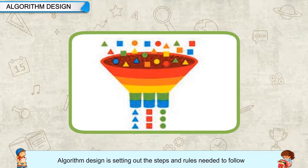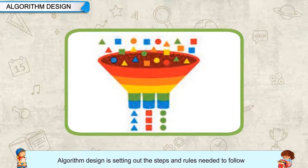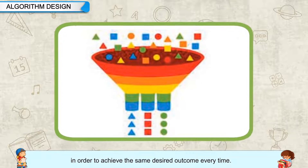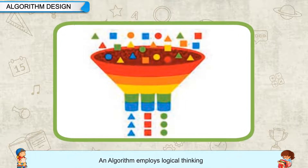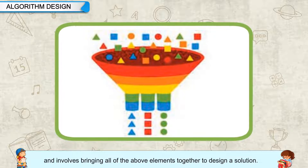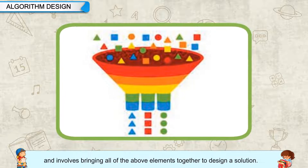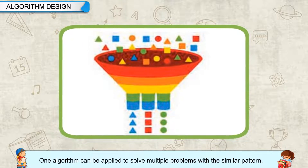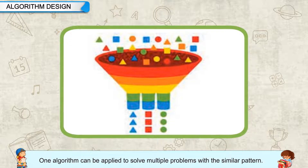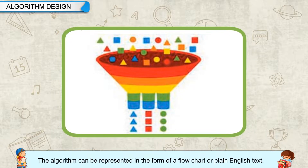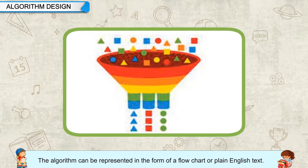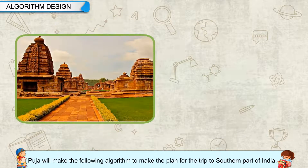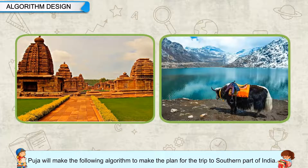Algorithm Design is setting out the steps and rules needed to follow in order to achieve the same desired outcome every time. An algorithm employs logical thinking and involves bringing all of the above elements together to design a solution. One algorithm can be applied to solve multiple problems with a similar pattern, and can be represented in the form of a flowchart or plain English text. Pooja will make the following algorithm to plan the trip to the southern part of India.